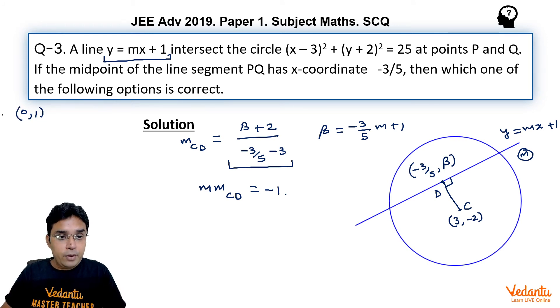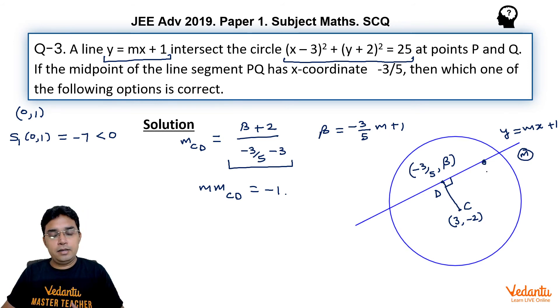Now if I put (0, 1) in the equation of this circle, you can check the value of s1 corresponding to this point (0, 1) comes out to be minus 7, which is negative, which means this point should lie inside the circle somewhere here. Which means I choose any value of m, this line passing through (0, 1) is going to intersect the circle at two real points always. So we do not have to bother about whether my answer of m will actually give us real points P and Q or not. Why I am telling you this thing? Please listen carefully.